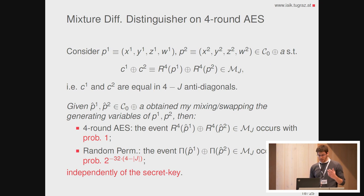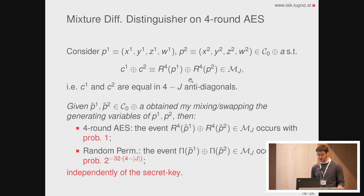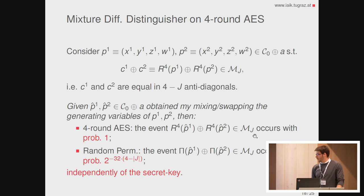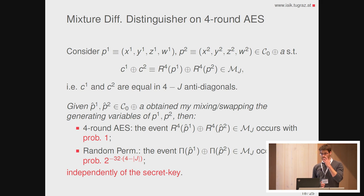So we have this property — how can we set up a distinguisher on four rounds of AES? Consider p1 and p2 as before, and assume the corresponding ciphertexts are in the same coset of M, equal in four-minus-j anti-diagonals. We generate other pairs of plaintexts by mixing and swapping the generating variables of p1 and p2, and we know that for four rounds of AES the corresponding ciphertexts are in the same coset of M with probability one. For a random permutation the same event happens with much smaller probability, and this is independent of the secret key, the S-box details, and the MixColumn matrix — so we can easily distinguish the two cases.